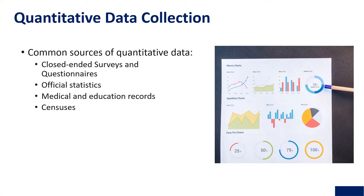Some of the common sources of quantitative data would be closed-ended surveys and questionnaires, official statistics, medical and education records, and a census. A census is when a complete population has been surveyed.